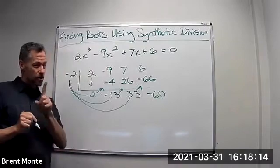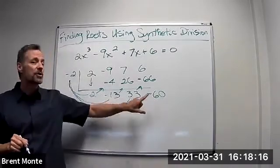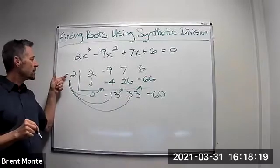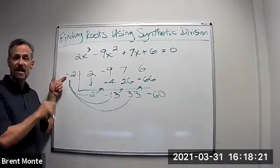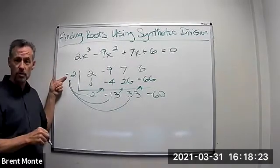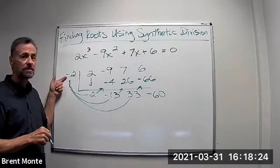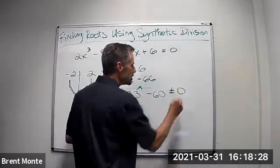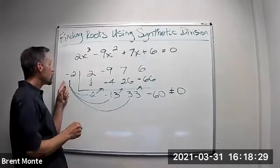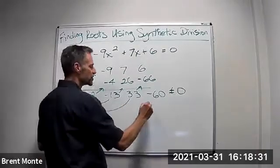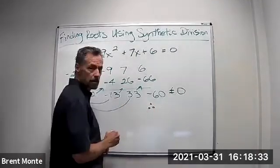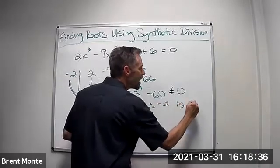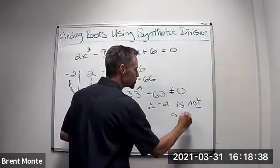What we're looking for is a remainder of 0. If we get a remainder of 0, it means whatever number we put out here is, in fact, a zero or a root of this polynomial. This isn't equal to 0, so negative 2 is not a root.